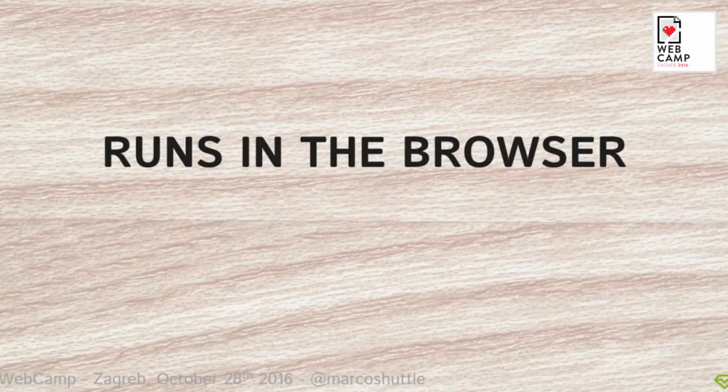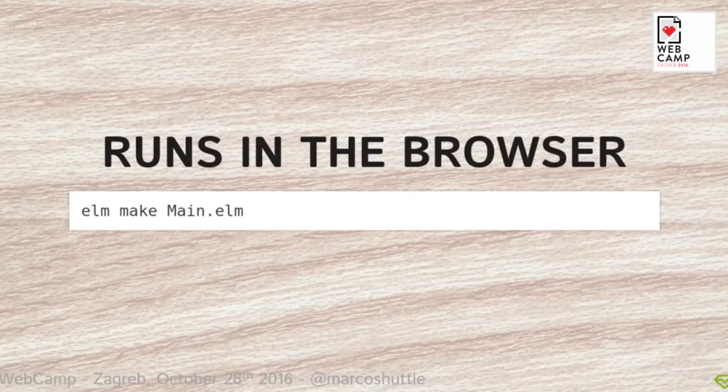I'd like to go through these three bullet points more closely in the Elm context. First: Elm runs in the browser. It was made to create web applications. In practice, you write Elm code, and what you get is some HTML, JavaScript, and CSS. You write all your code in just one programming language — Elm — and then compile it, and what you get as output is some HTML or JavaScript with CSS if needed.